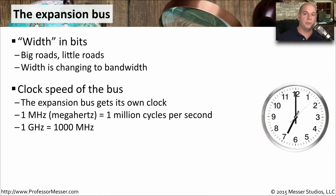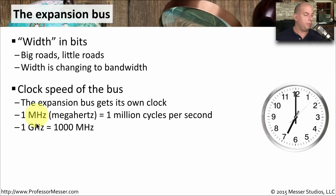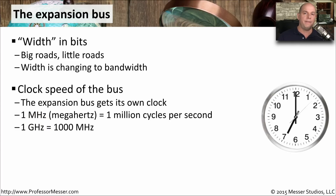There's another important characteristic of the expansion bus: how fast the bus is going, which we refer to as the clock speed of the bus. Every bus has its own clock and is able to send information at a certain rate of speed. We measure the speed as the number of cycles that we can perform in a single second — a cycle is called a hertz. If we can perform one million cycles in a second, we call that a megahertz. One thousand megahertz would be a gigahertz. Generally, the faster the clock rate, the more information we can transfer in and out of that bus.